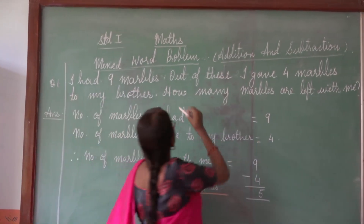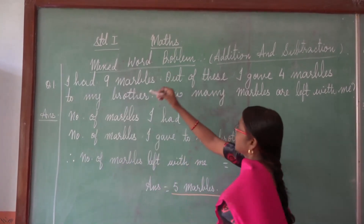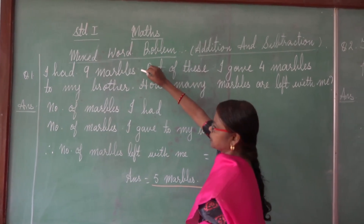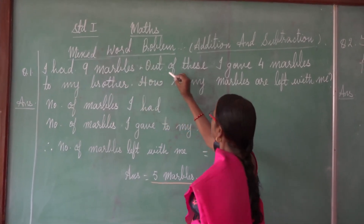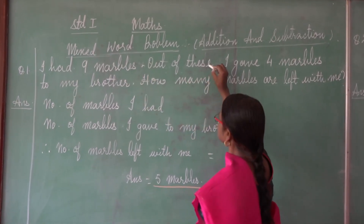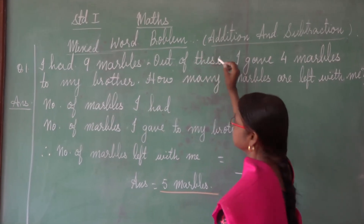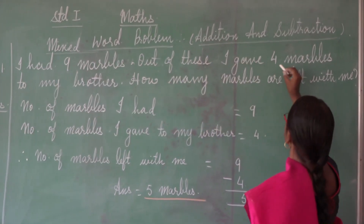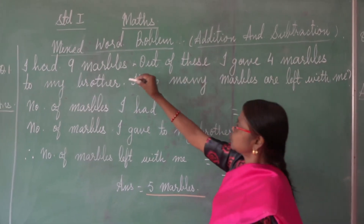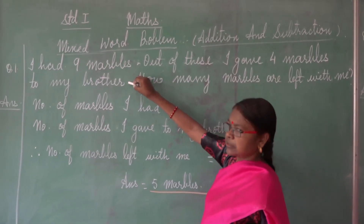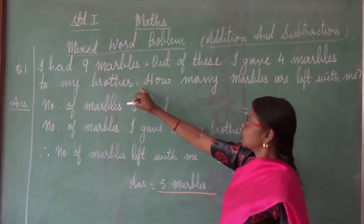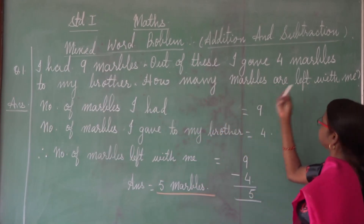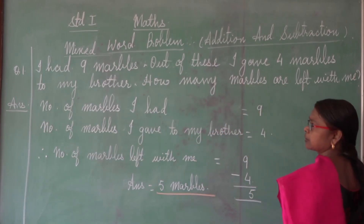I had nine models. There is a full stop here. Out of these models, I gave four models to my brother. Again, there is a full stop here. How many models are left with me?